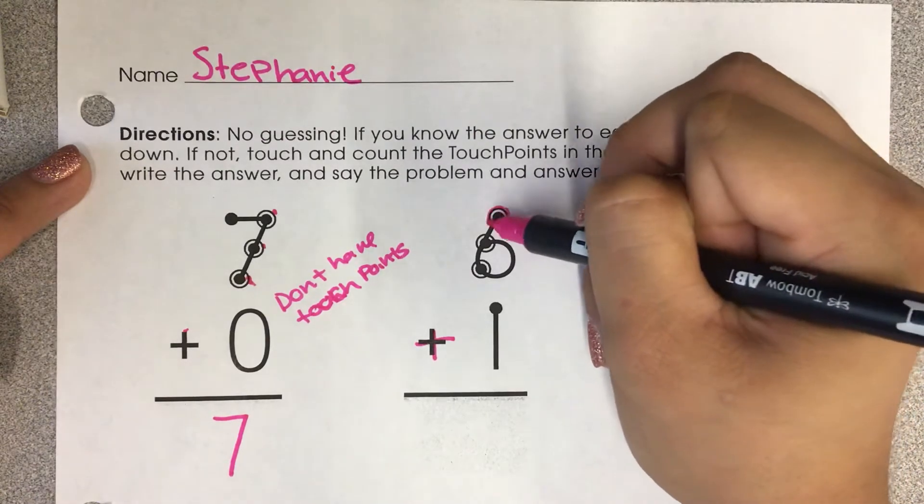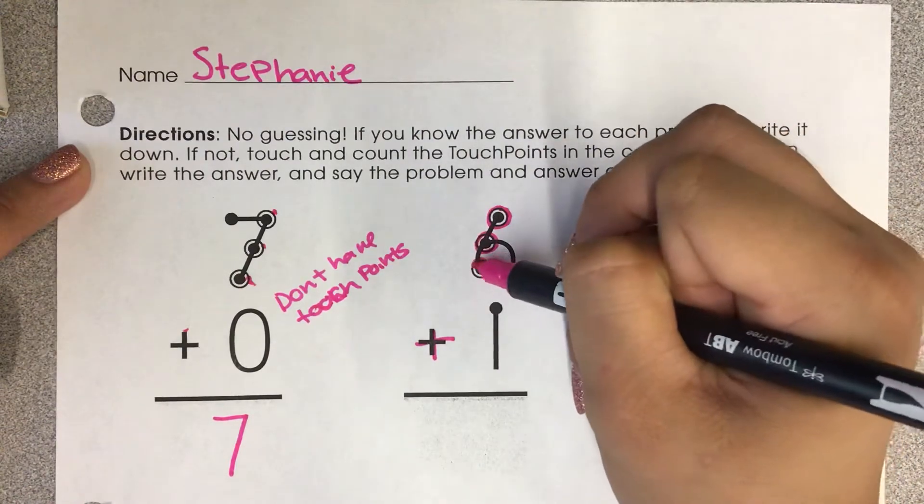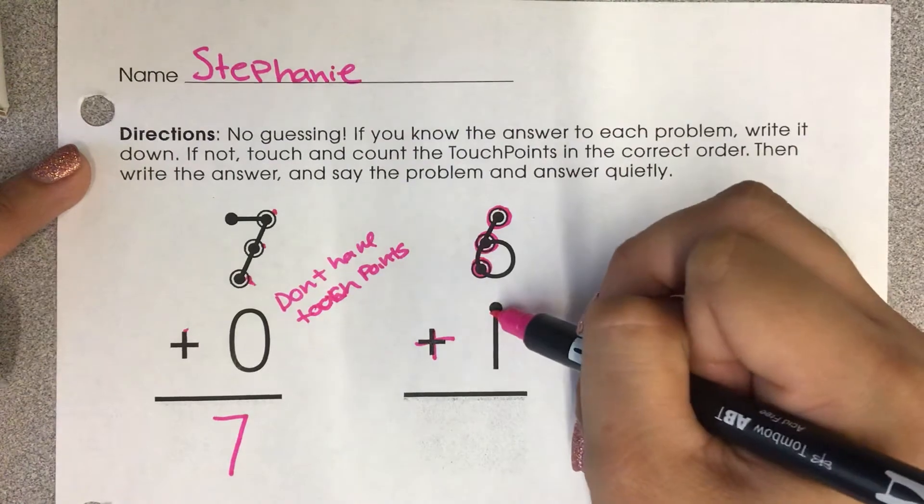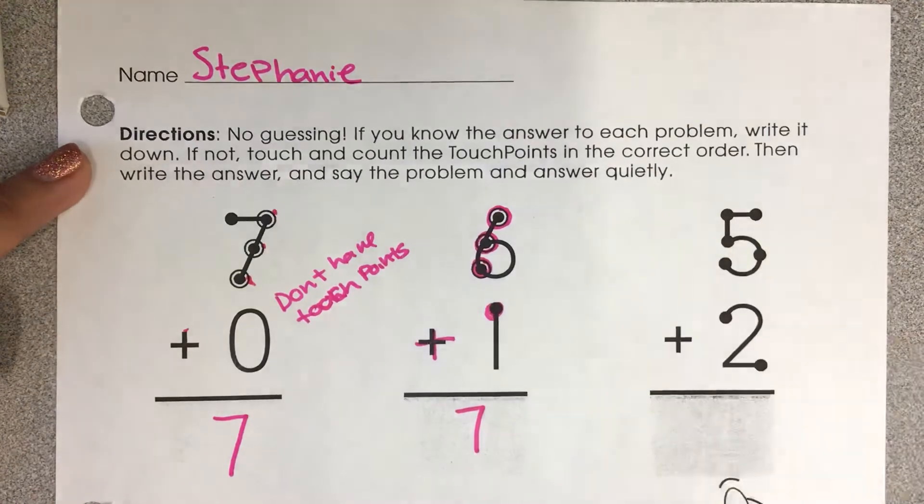So 1, 2, 3, 4, 5, 6, and 7. Good job. So 6 plus 1 is 7.